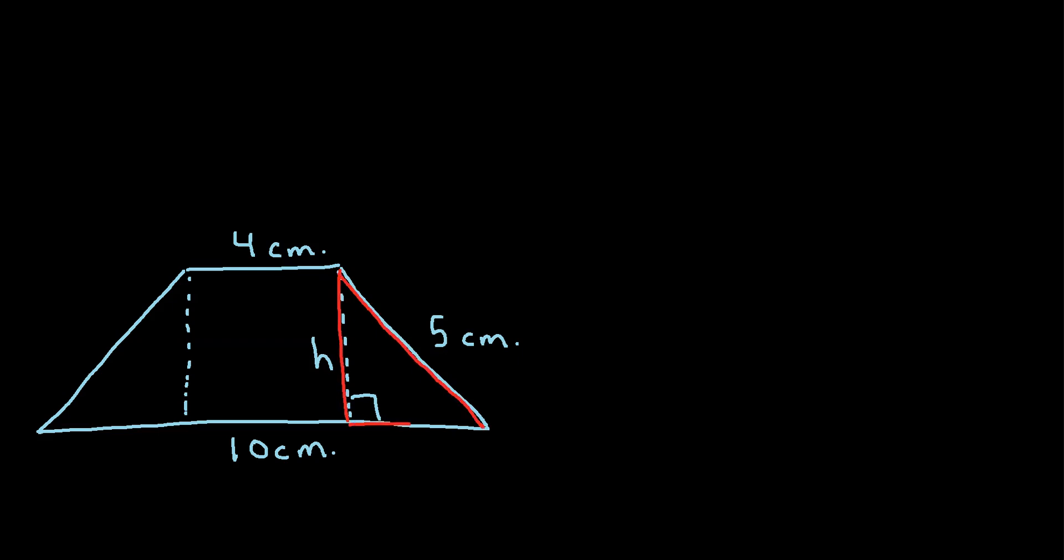And what we know about a right triangle is that we can use the Pythagorean theorem to figure out the hypotenuse. So that says this small side squared plus this other small side squared must be equal to this hypotenuse, so this 5 right here. So we really just need to figure out what is this distance, let's call it x.